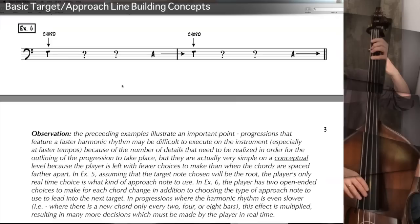In progressions where the harmonic rhythm is even slower — a new chord every 2, 4, or 8 bars — this effect is multiplied, resulting in many more decisions which must be made by the player in real time. It's actually more difficult creatively to create a bass line where there's less information given to you. If you're playing a song like So What or Impressions with D minor for 8 bars, it's easier to execute the line, but much more difficult to construct it because you have to make a lot of choices about where to place target notes. Where harmonic rhythm is two chords per bar, the choices are already made for you.